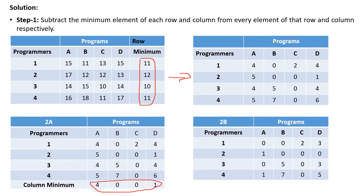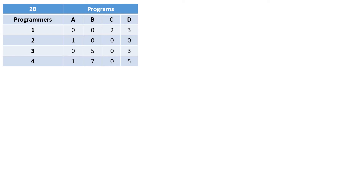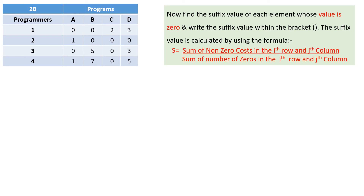Once we get this matrix, the next step is to find the suffix value S for each zero. The suffix value is calculated by the sum of non-zero costs in the i-th row and j-th column divided by the number of zeros in the i-th row and j-th column. For S(1,1): the non-zero values in row 1 and column 1 sum to 2+3+1+1 = 7, divided by the number of zeros, which is 3, giving 7 divided by 3.